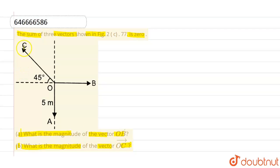So we are given that OA vector is of 5 meters. Magnitude of OA vector is of 5 meters. We have to find magnitude of OB vector as well as magnitude of OC vector.